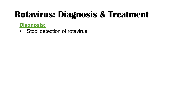Rotavirus infection is diagnosed by stool detection of the virus. This can be done with ELISA (enzyme-linked immunosorbent assay) or PCR (polymerase chain reaction), both of which help detect the virus and confirm the diagnosis.